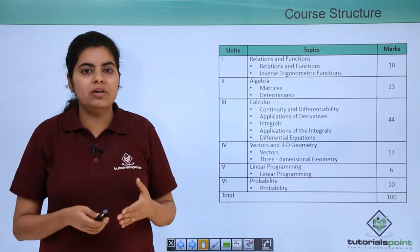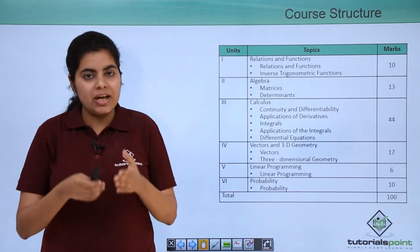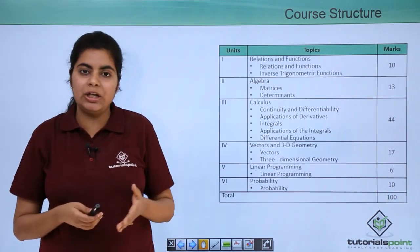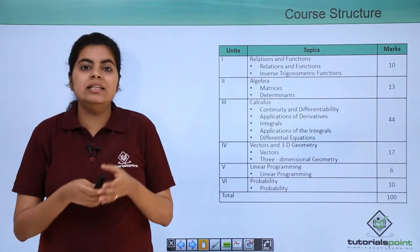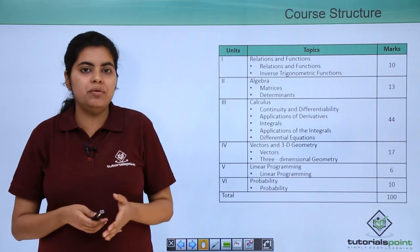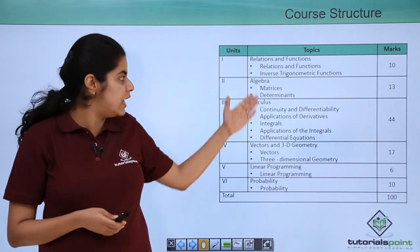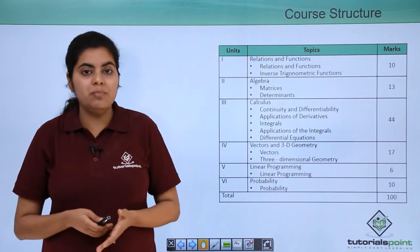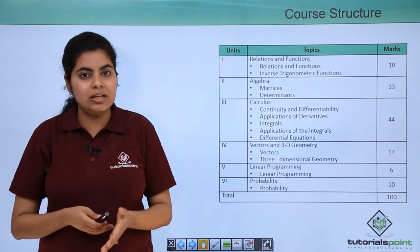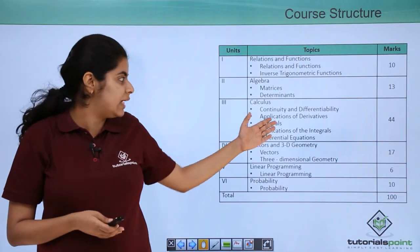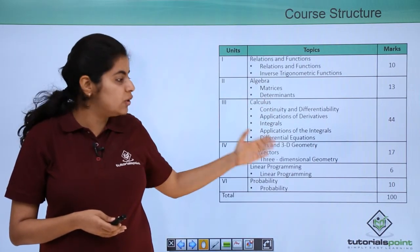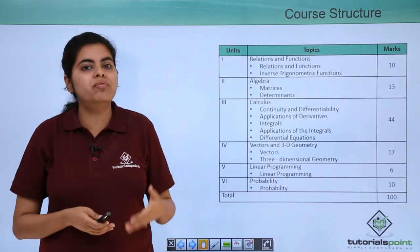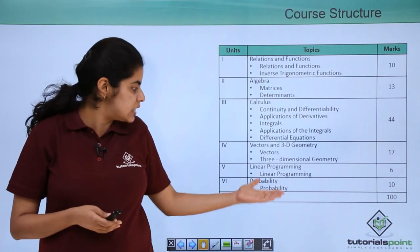After we have covered all these things, I just need to mention two or three things in particular again: that the easiest unit you would find would be, according to me, algebra and linear programming. The most important one, although you find difficult, you have to cover it fully - is your calculus. After you have covered all these three units you can go for vectors 3D, relation functions and probability.